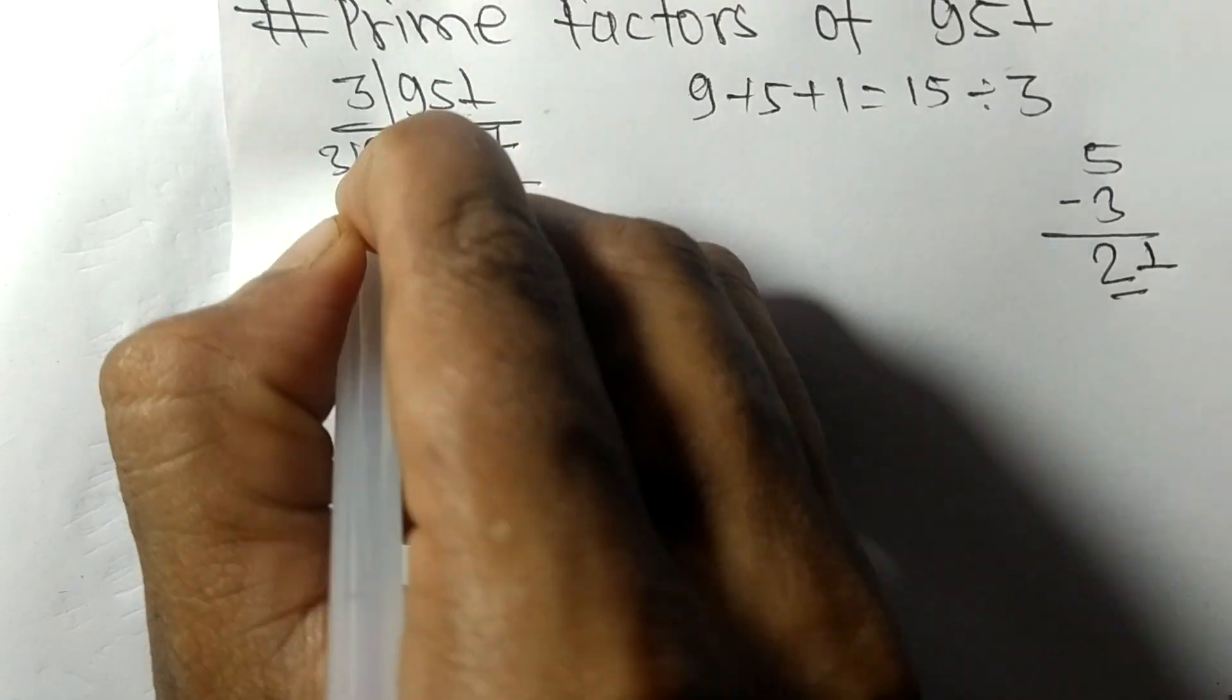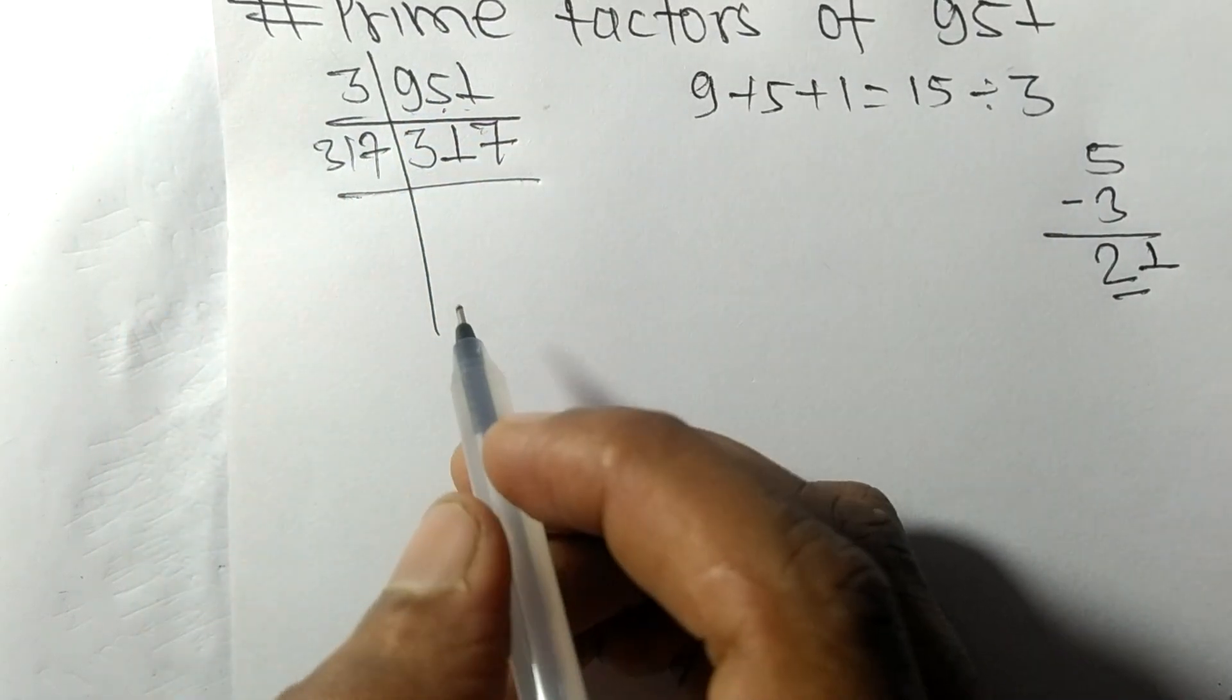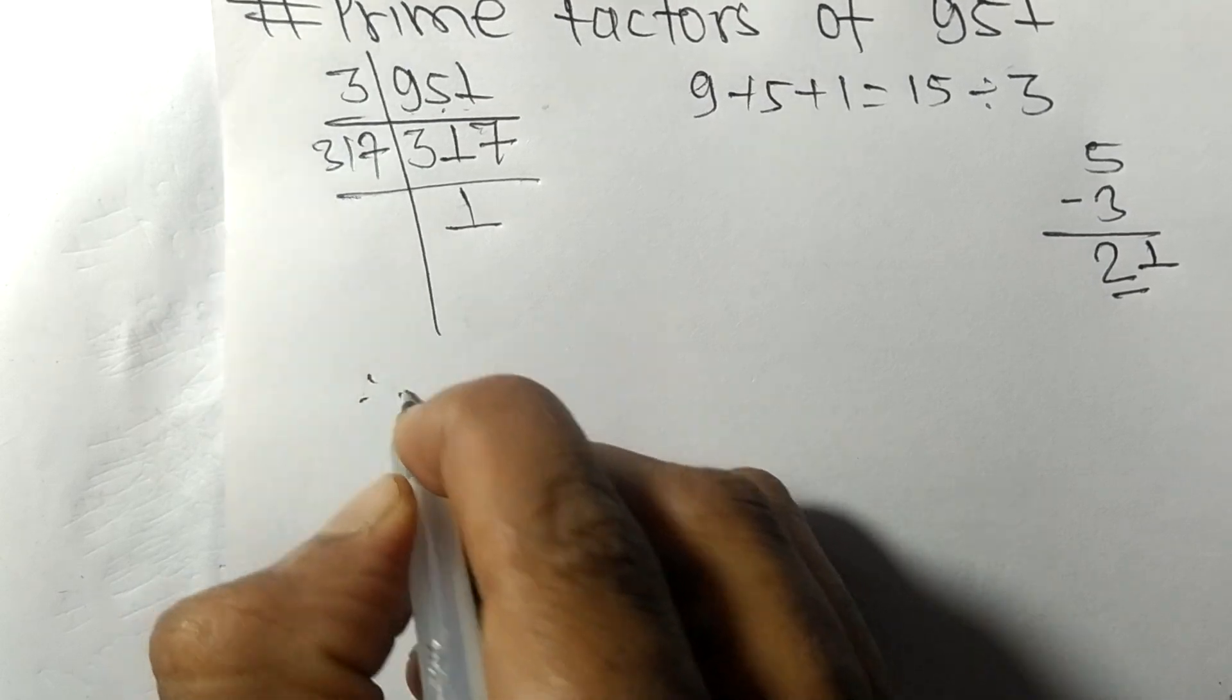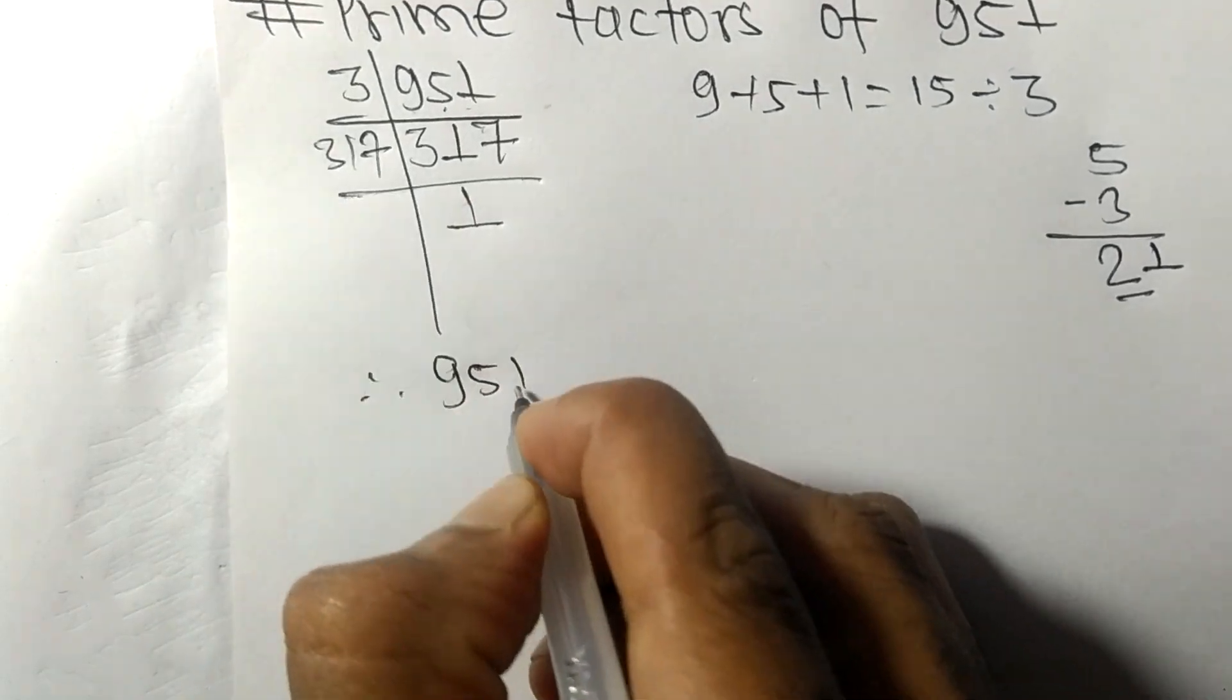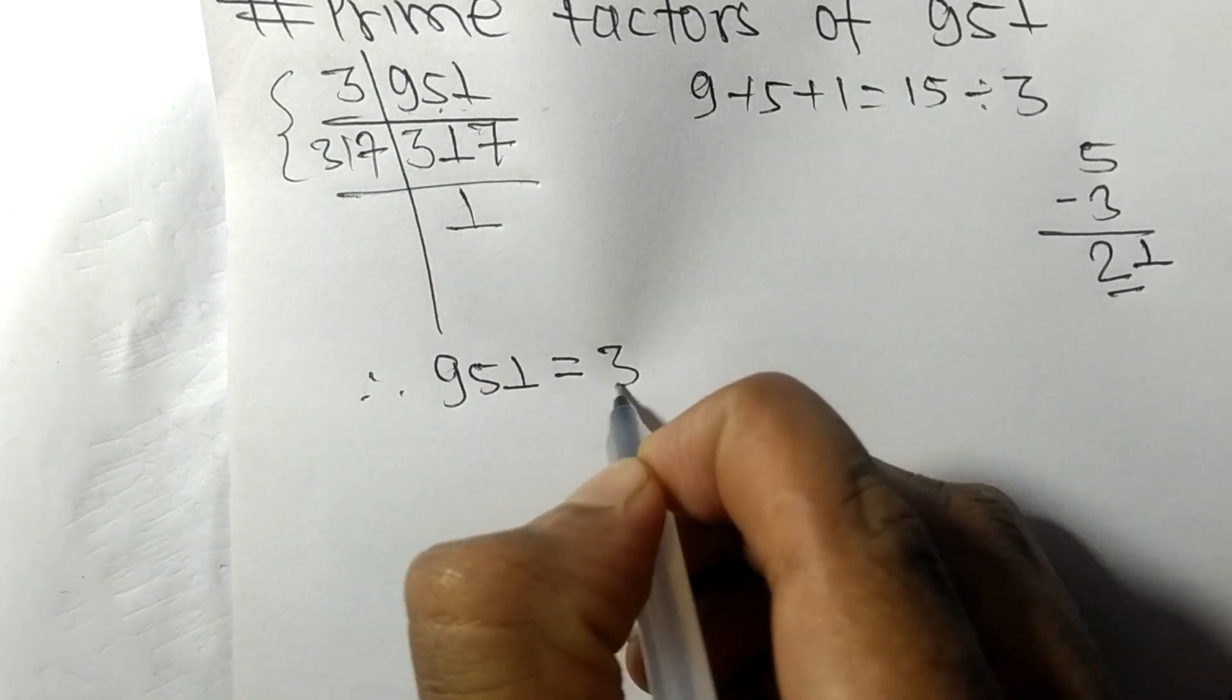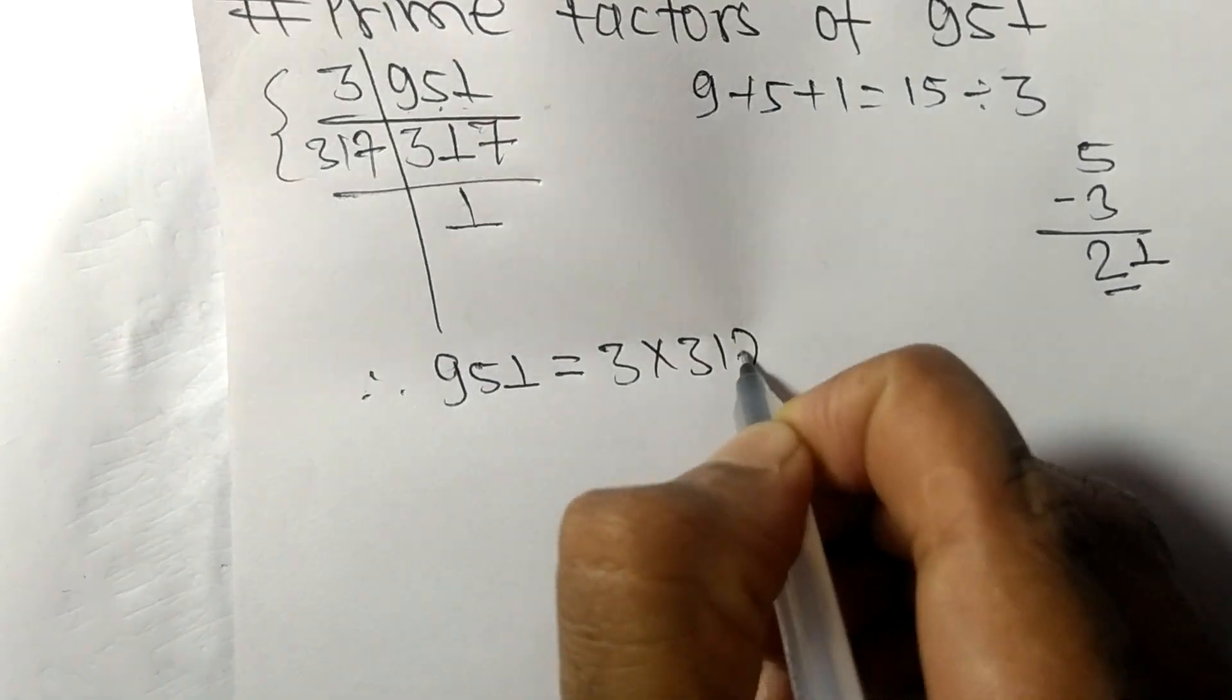On dividing we get 1. Therefore, 951 is equal to, from this side, 3 times 317.